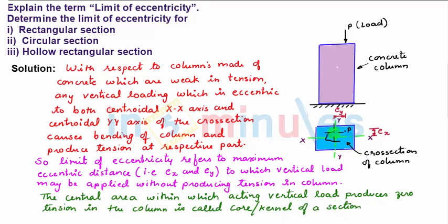There is one arbitrary central area within any section of a column within which if a load is applied, no tension is produced in the column. This area is called core or kernel. Now we have to determine this core or kernel area, or the limit of eccentricity for these three sections.